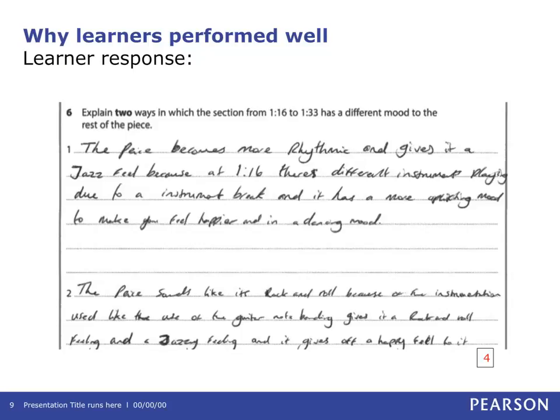Question 6. This is a higher level question that requires an explanation. There is a clear improvement in the learner's approach to this question, where it is evident that centres are preparing for this more fully. Some learners demonstrated planning of their response in the margin, which appeared to have helped them focus on the specific aim of the question. The excerpt will be played from 1 minute 16 to 1 minute 33. This slide shows a good response to the question, where the learner has provided a valid explanation of the way in which the section has a different mood to the rest of the piece.